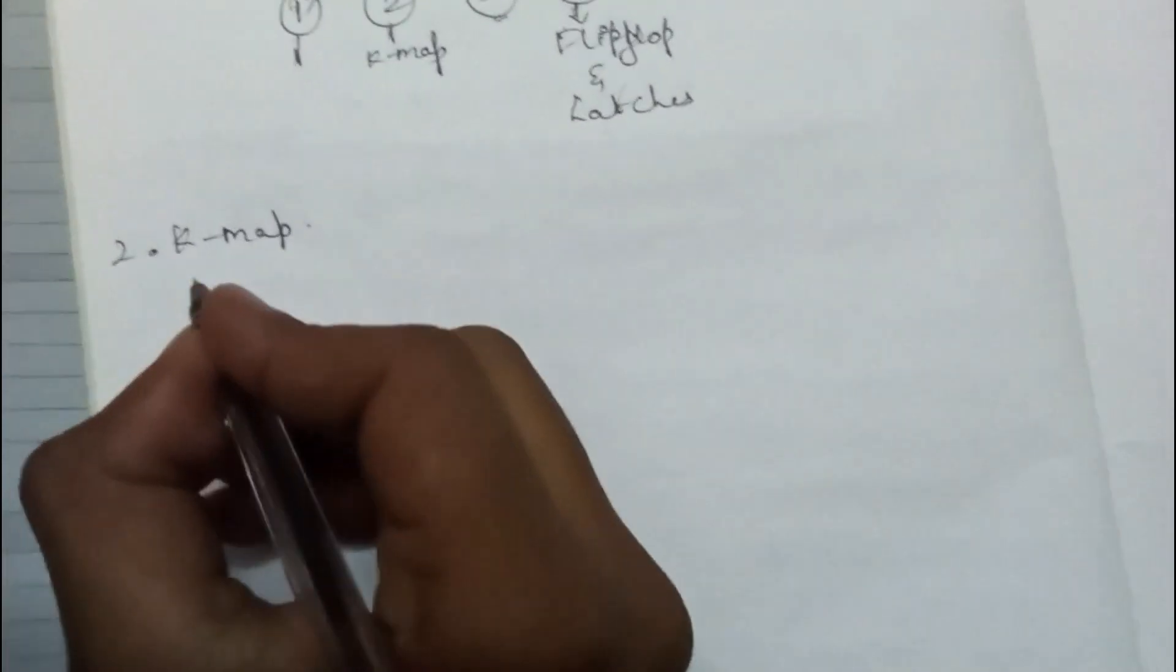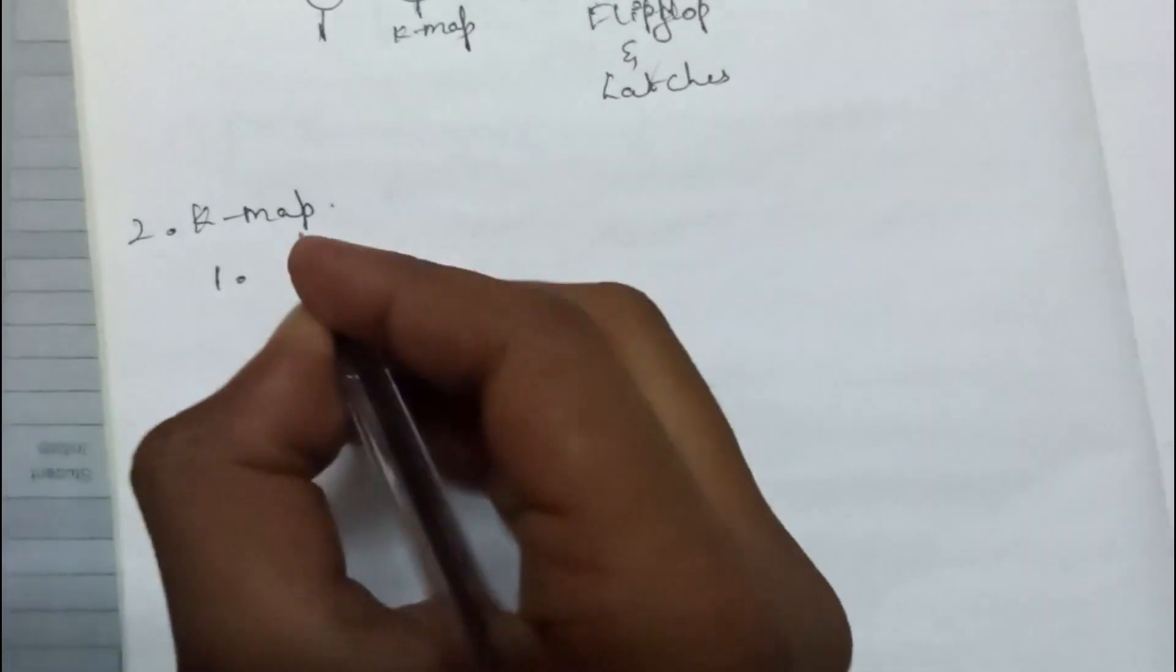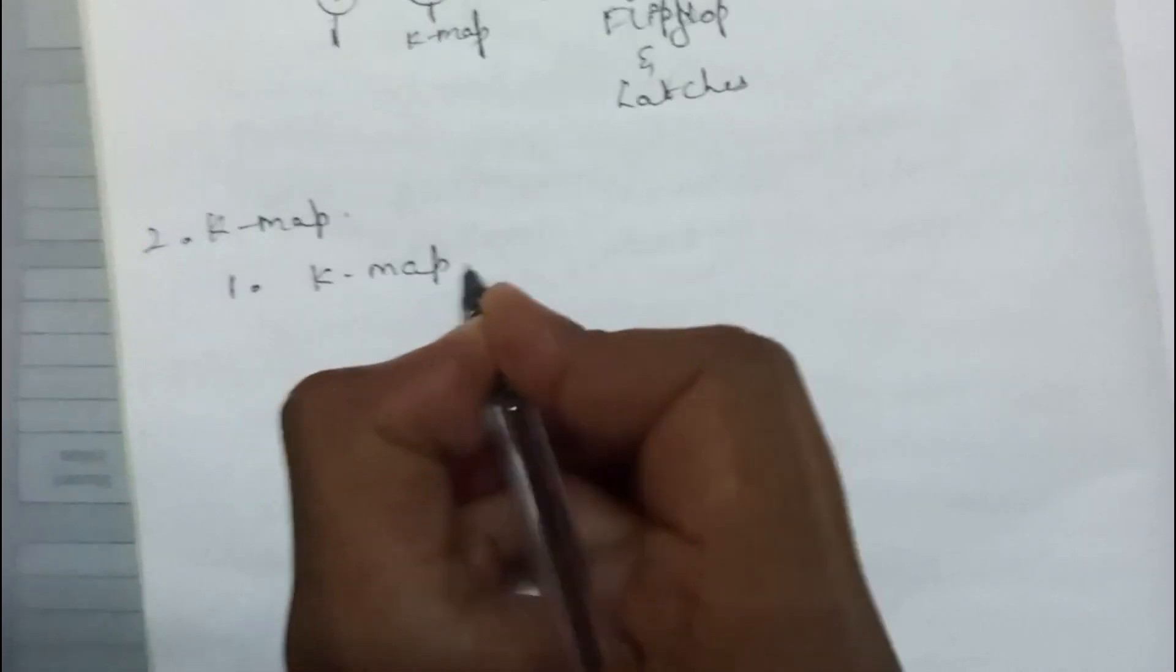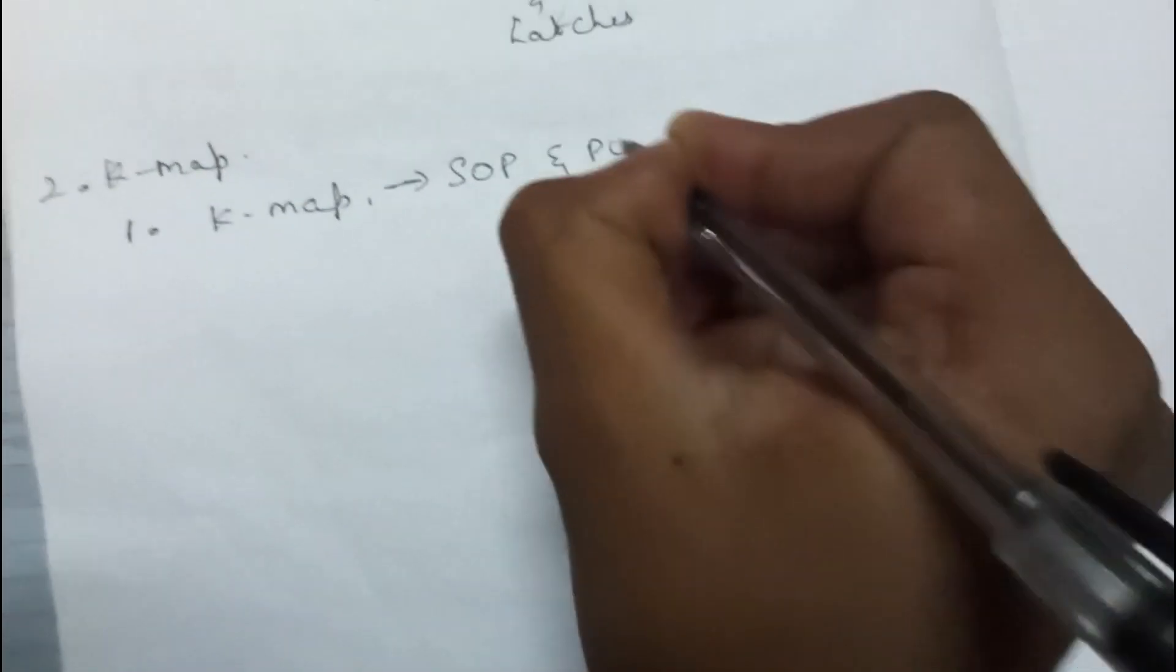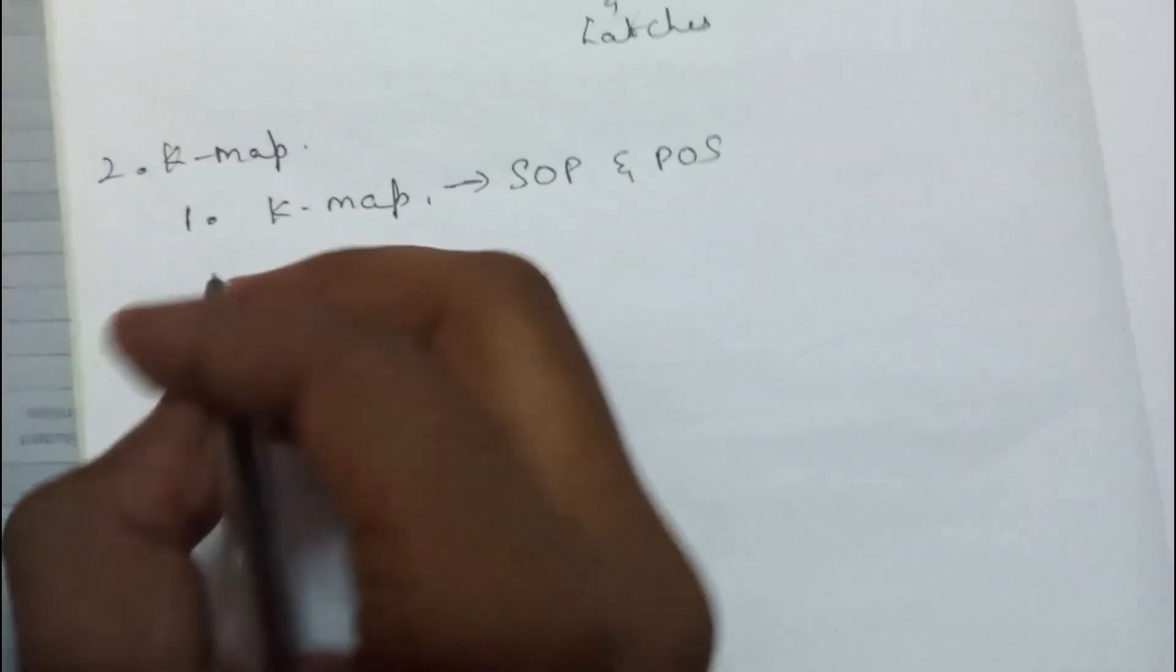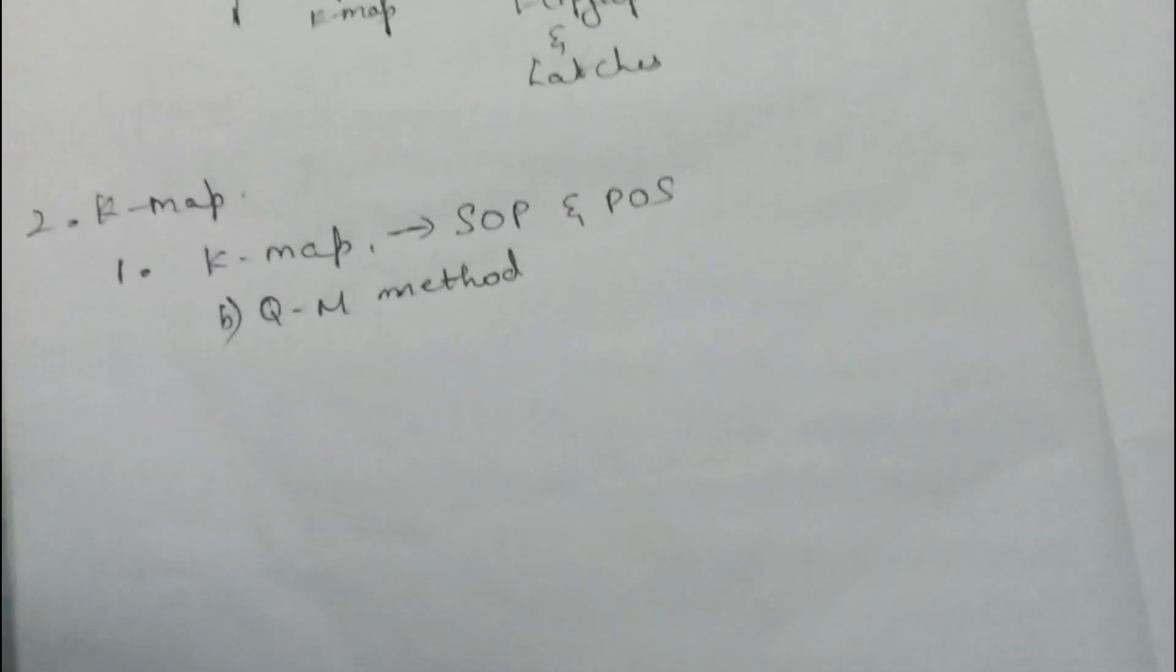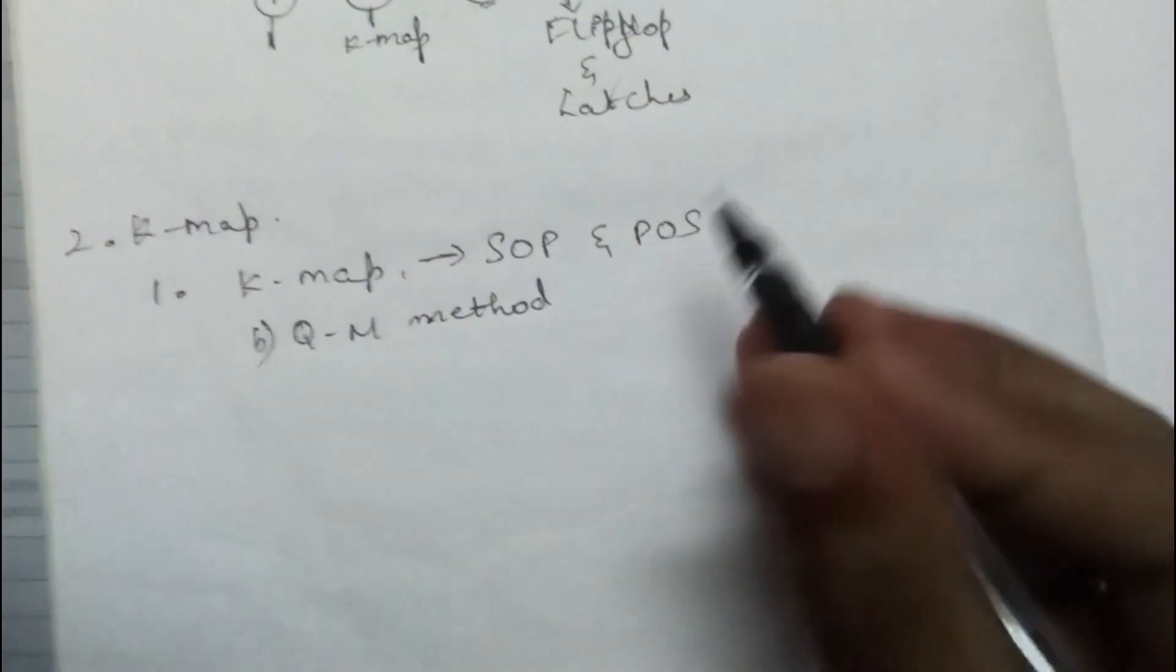In K-map, you have to study K-map mapping rules and everything. First, study SOP and POS. Second, study Quine-McCluskey method. In K-map, only these two topics will get you 15+ marks in second module.